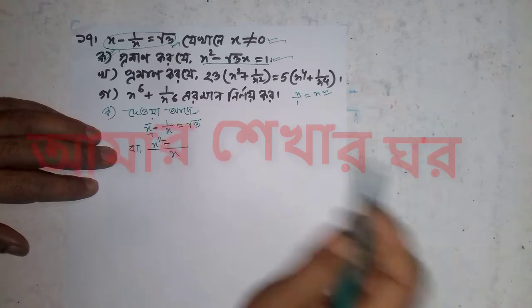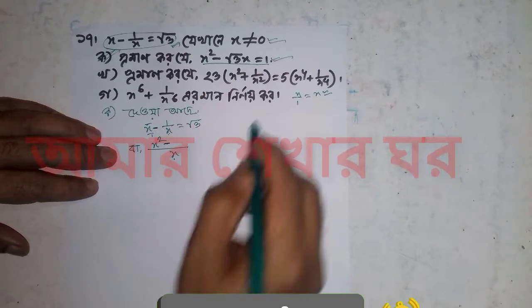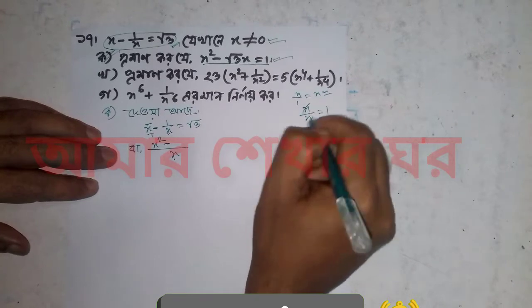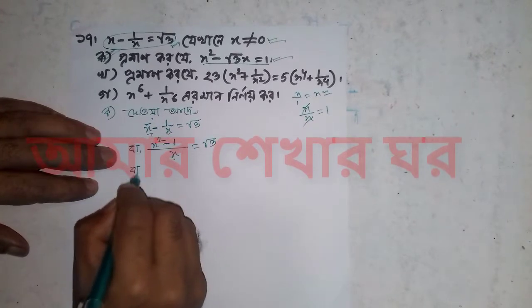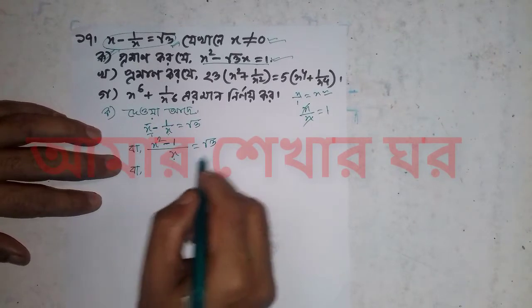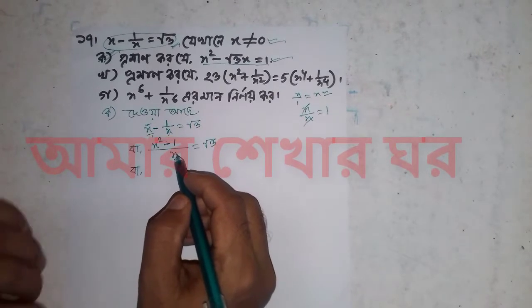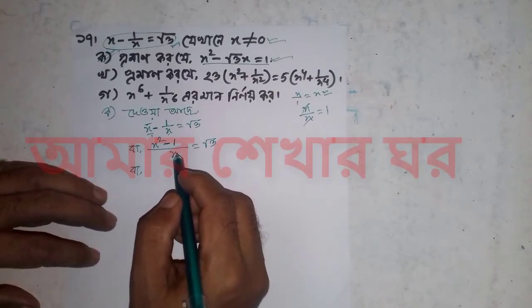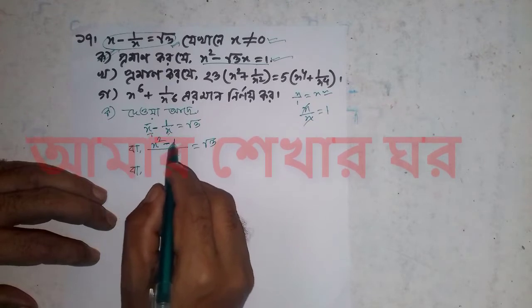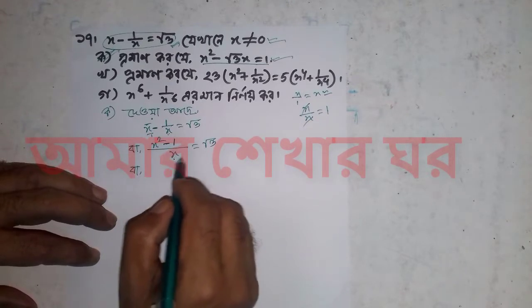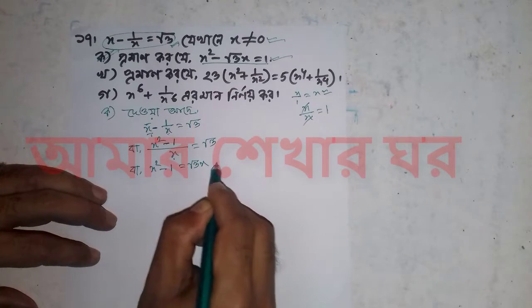Those who do not have an addition: given x squared minus 3x equal to 1, we have x squared minus x equals 1.